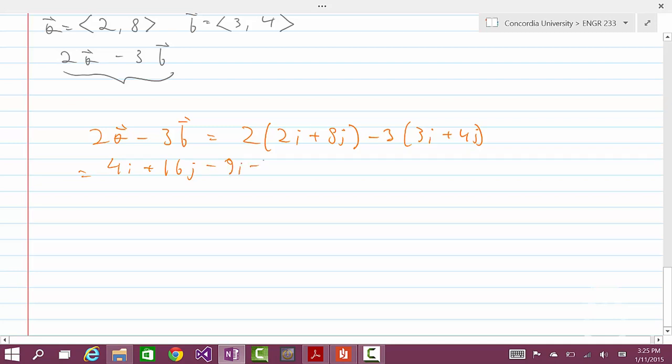This simplifies to 4i plus 16j minus 9i minus 12j. Now let's combine the like terms. The i's and j's are the like terms. This equals to 4 minus 9, that is negative 5i, and 16 minus 12 is plus 4j. So that's our new vector.